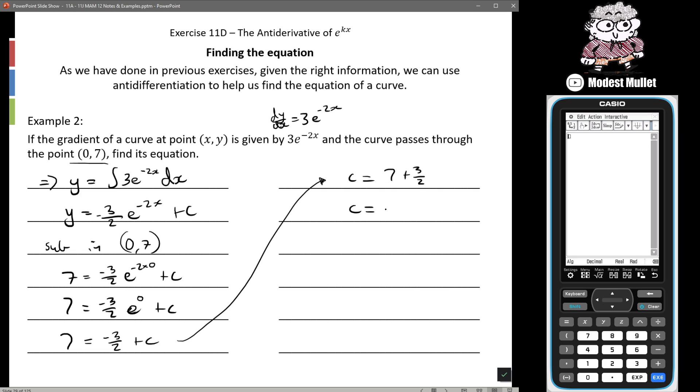So c is equal to... 7 as a fraction over 2 would be the same as 14 on 2. So c is equal to 14 plus 3 will be 17 on 2. Therefore we can say y is equal to negative 3 on 2 e to the negative 2x plus 17 on 2.